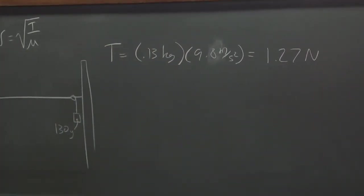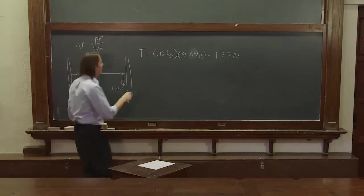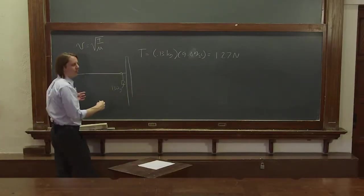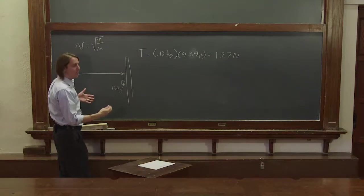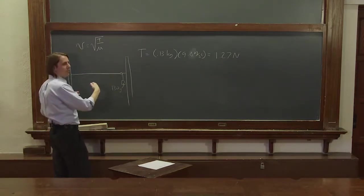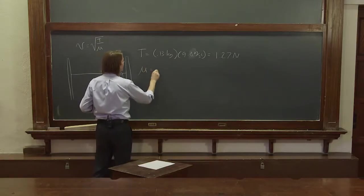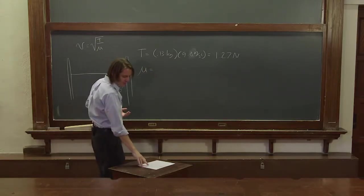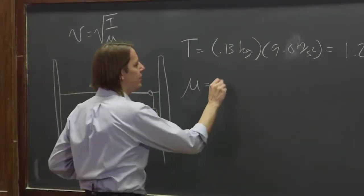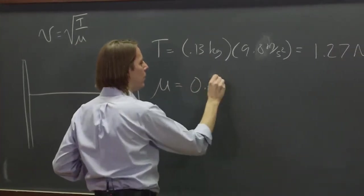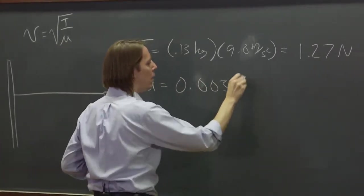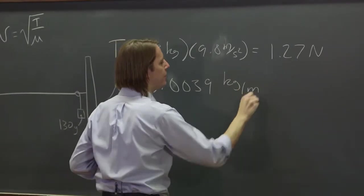The mass density is a little different from when we did our normal modes because I have less tension in the string. The string is elastic, so when you put less tension it bundles up more. When you stretch it really hard, the mass density goes down. The mass density in this case, I've measured it, is 0.0039 kilograms per meter.